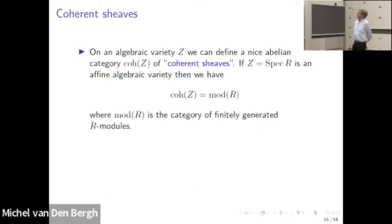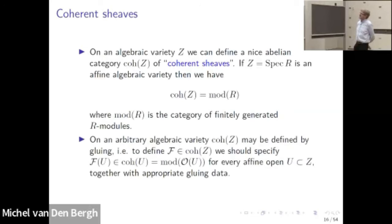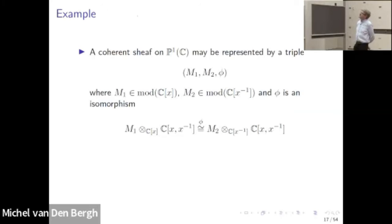In an algebraic variety, we can define coherent sheaves. On an affine algebraic variety this is just the module category. For a general algebraic variety we have to do it by some gluing procedure. To define a coherent sheaf on the projective line, we have to say what it is on the two affine opens, and we have to say how they match up on the intersection. This is captured by a gluing map φ.